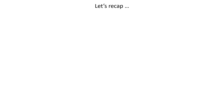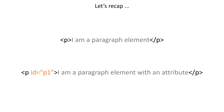Let's recap. An element consists of an opening tag and a closing tag with content contained between the two tags. Elements can have attributes which can be used to label the element or even change how the element looks and behaves when viewed on a browser. In this lesson we will look at the general structure of an HTML document.